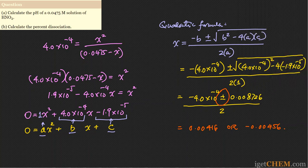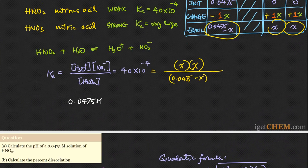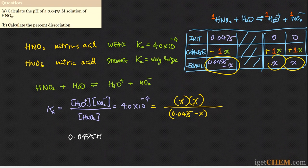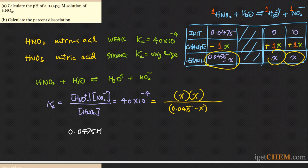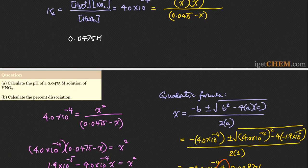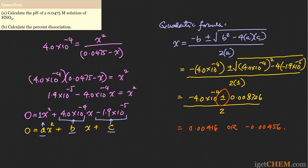Since x represents the concentrations of H₃O⁺ and NO₂⁻ in the ICE table, x must be a positive number. The only valid answer is therefore x = 0.00416.